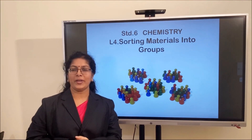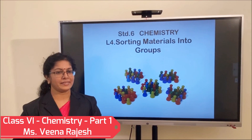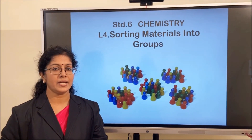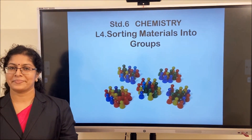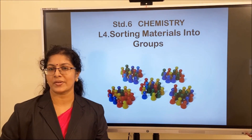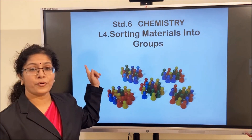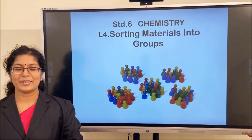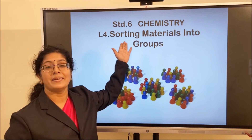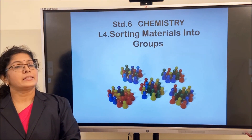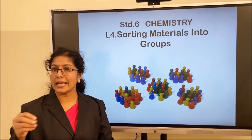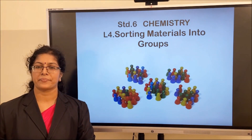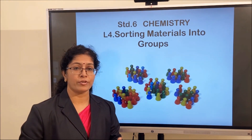Hi students, now you are in standard 6. Until 5th standard you were learning basic science as a subject, and from this year onwards you are going to learn physics, chemistry, and biology from your science textbook. I'm going to teach you a chapter in chemistry — lesson 4, called 'Sorting Materials into Groups.' Sorting simply means taking out similar things or objects from a wide variety of different objects.